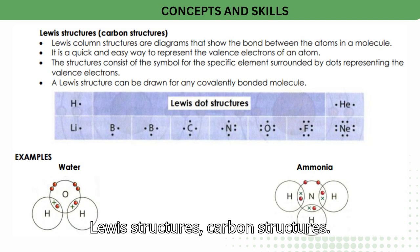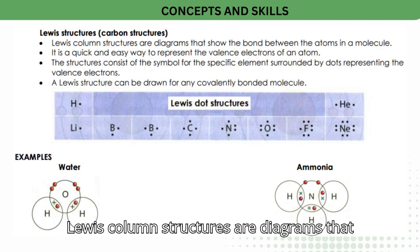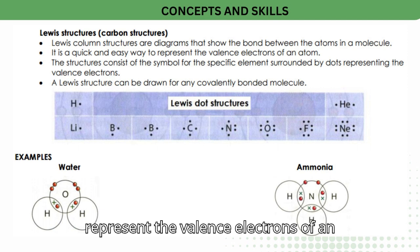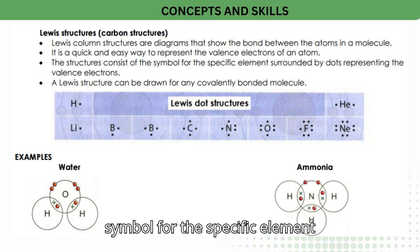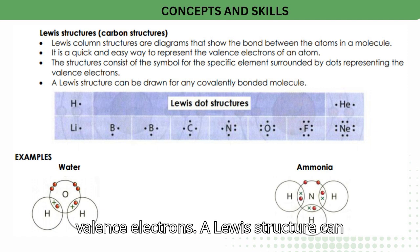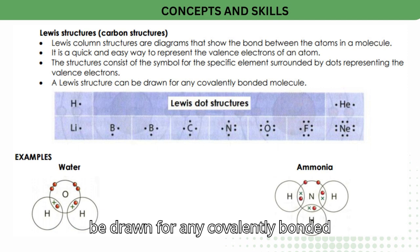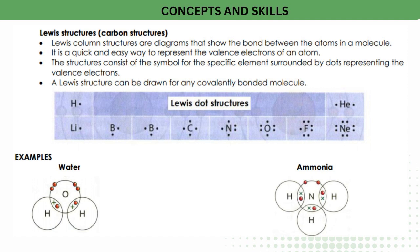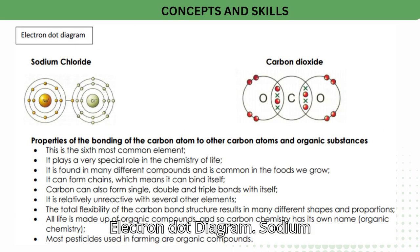Lewis structures (carbon structures) are diagrams that show the bonds between atoms in a molecule. They are a quick and easy way to represent the valence electrons of an atom. The structures consist of the symbol for the specific element surrounded by dots representing the valence electrons. A Lewis structure can be drawn for any covalently bonded molecule. Examples include water, ammonia, sodium chloride, and carbon dioxide.